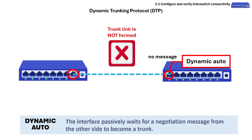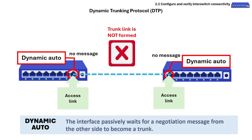For example, if both switch interfaces are configured with Dynamic Auto mode, they will never generate DTP messages and the link will be an access link.